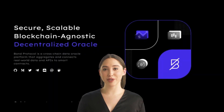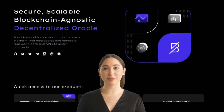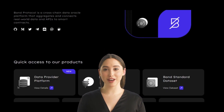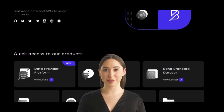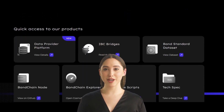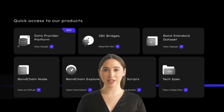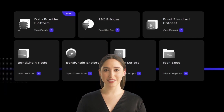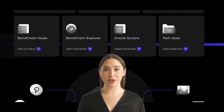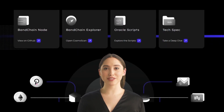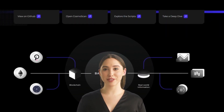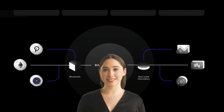Band Protocol is a decentralized oracle network that enables smart contracts to securely access off-chain data and APIs. The platform provides a secure and transparent way for smart contracts to interact with real-world data such as prices of assets, weather conditions, or other information that is not natively stored on the blockchain.